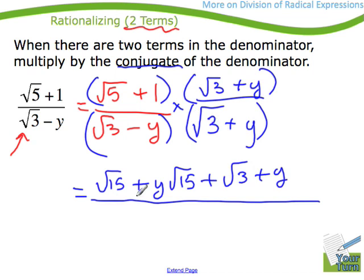Let's see how the bottom looks. Root 3 times root 3 is root of 9, which is 3. That's not bad. Root 3 times y would be a plus y root 3. Minus y times 3 would be a minus y root 3. I'm liking that. And finally, minus y times y is a minus y squared.